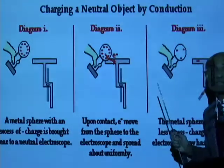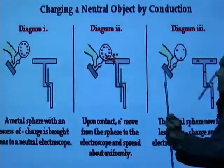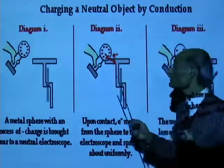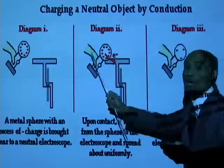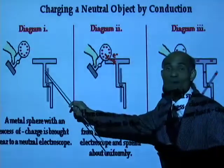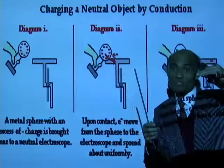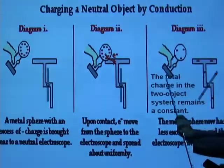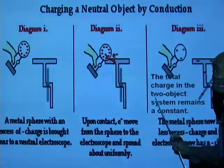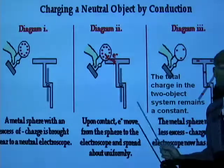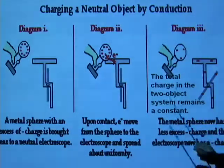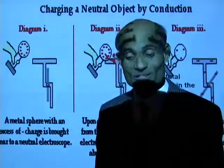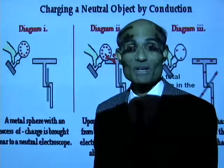The phenomenon that happened here is sharing of charges. By making a charged object in contact with a neutral object, the charges from the charged object got shared. But the total amount of charge in the two-object system will not change — the total amount of charge remains a constant.